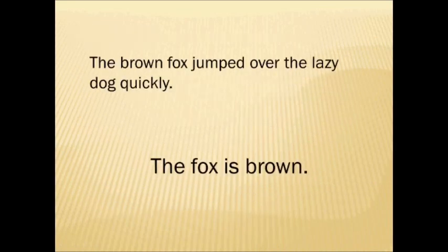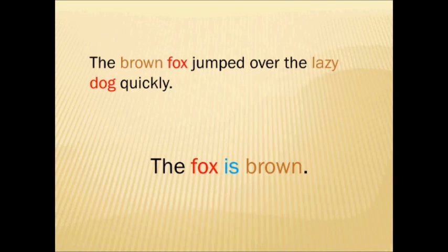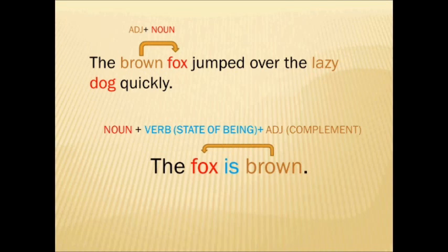Look at these two examples. The first sentence was our original sentence from the first video: 'The brown fox jumped over the lazy dog quickly.' The second example is a slightly modified sentence in which we've eliminated most of the information except for the first idea: 'The fox is brown.' The word brown described the word fox, just like the word lazy describes the word dog. In the second example, even though the word brown is not directly in front of the word fox, it is still describing the word fox. This particular relationship we refer to as the adjective complement of the sentence.